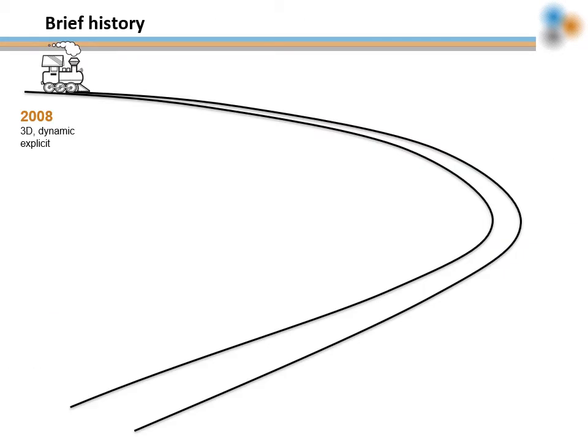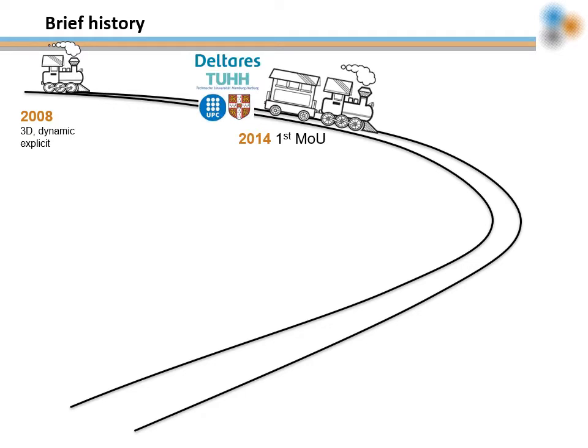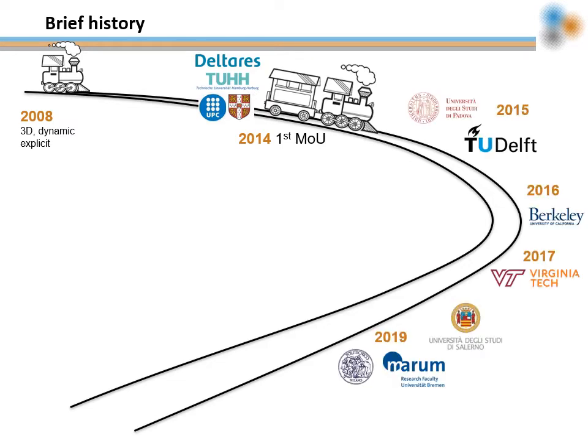The development of the Anura3D code began in 2008. Different groups started using and developing the material point method for geotechnical applications and soil-water structure interaction problems. In 2014, and after several years of collaboration, Deltares, the University of Hamburg, Barcelona Tech and the University of Cambridge decided to combine efforts to develop an MPM software. The first memorandum of understanding was signed and the MPM research community was defined.